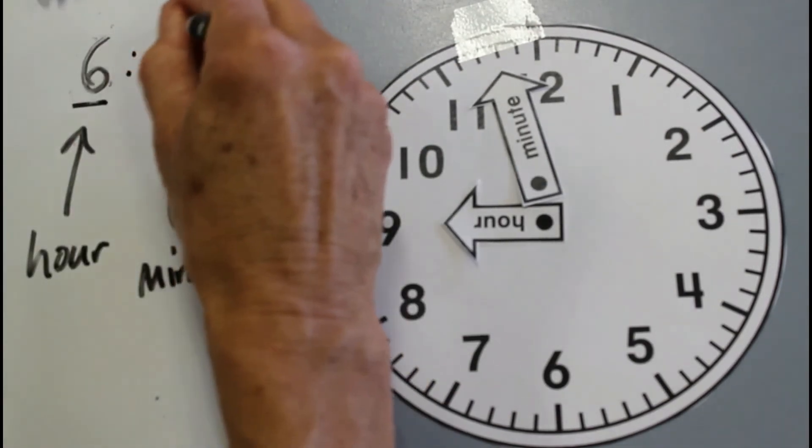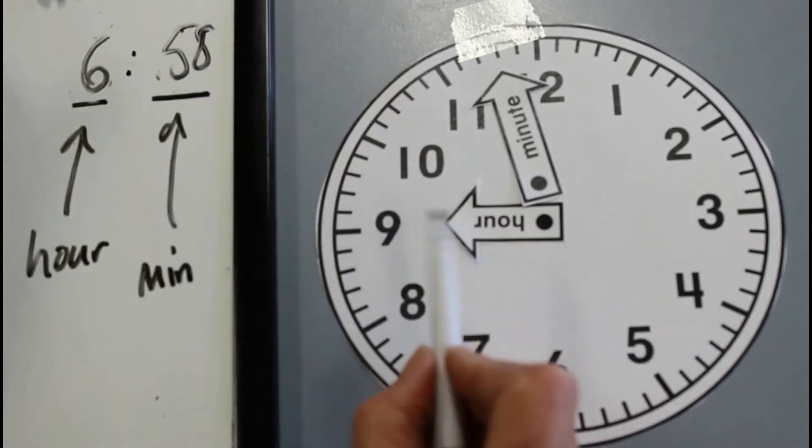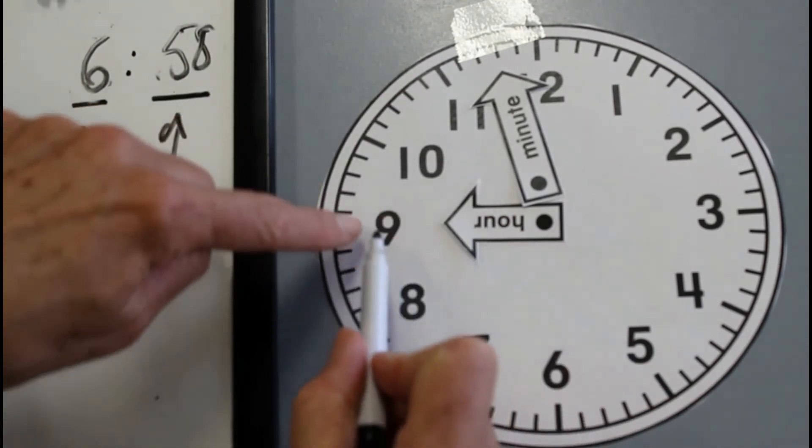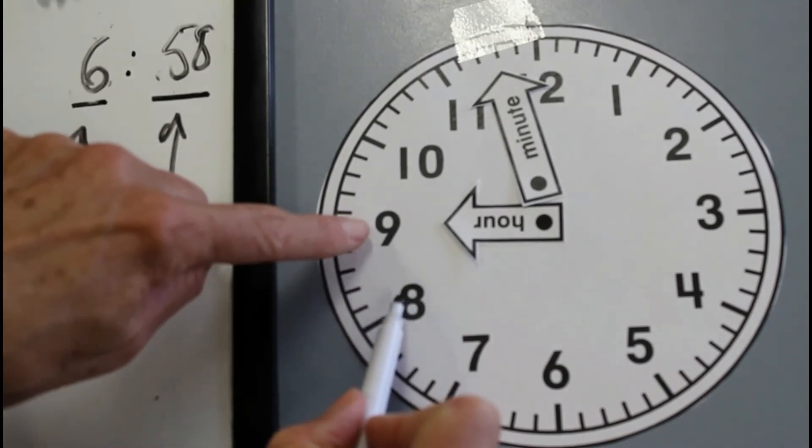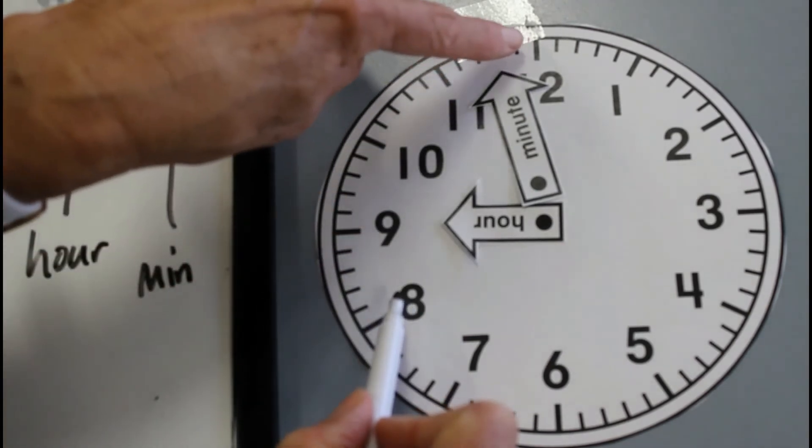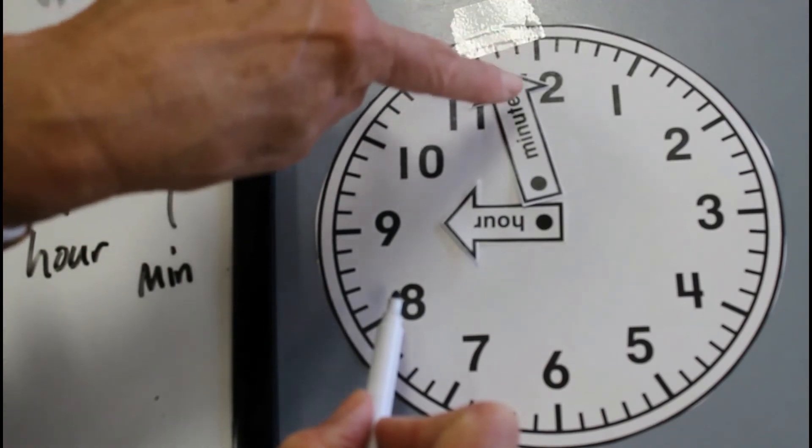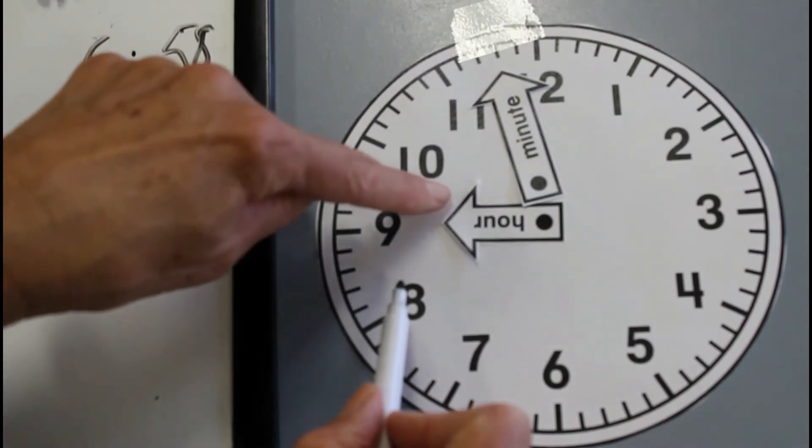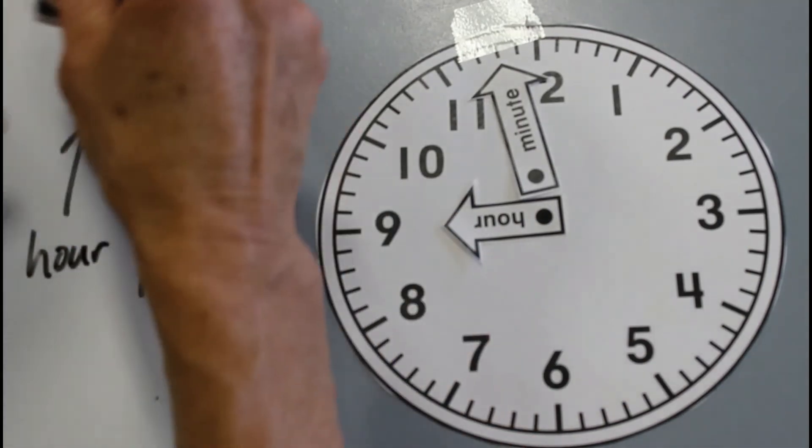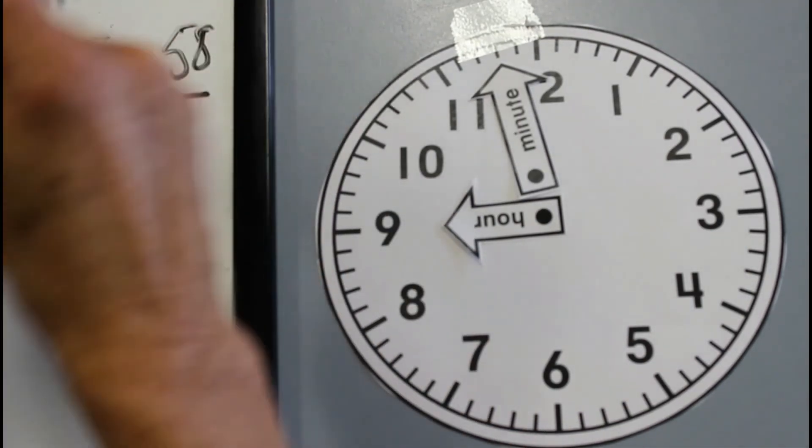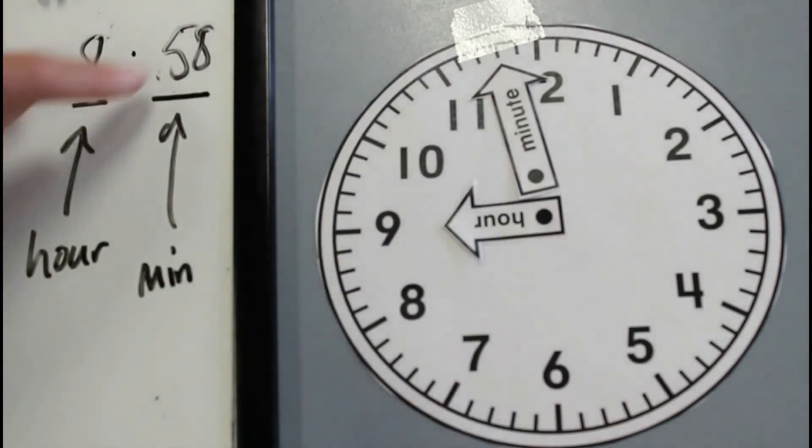It's 58 minutes, and the space where the hour hand is, it's no longer at the six, it's between the eight and the nine, hasn't got to nine yet, because it's not right on the nine o'clock. As soon as the minute hand points to the twelve, it's nine, but at the moment, it's actually in the eight space, so let's put that as eight. So it's 8:58.